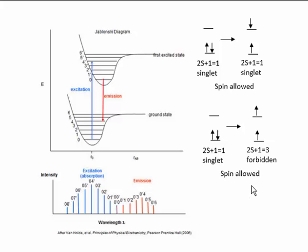There are many different kinds of quenching, collisional quenching as an example. Another possibility is that the excited state electron can fall back down to the ground state in the process emitting light. There are two different kinds of processes in which this occurs: one is called fluorescence, and one is called phosphorescence. Let's look at fluorescence first.